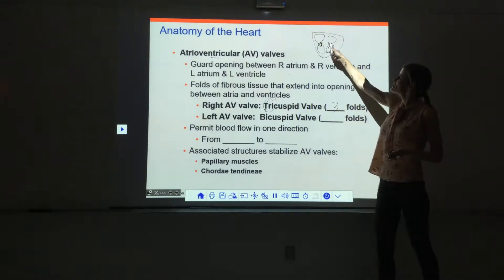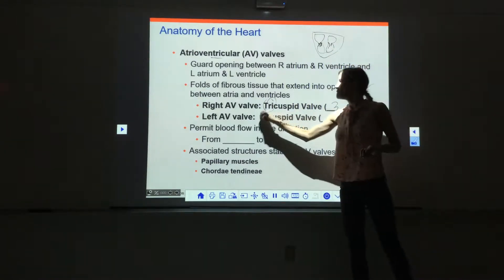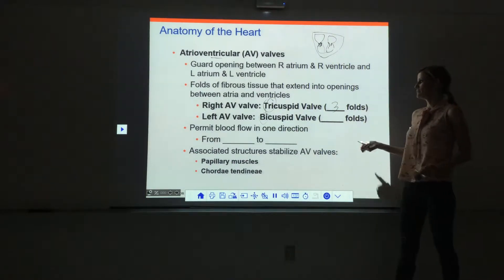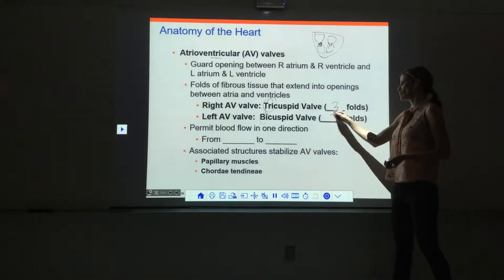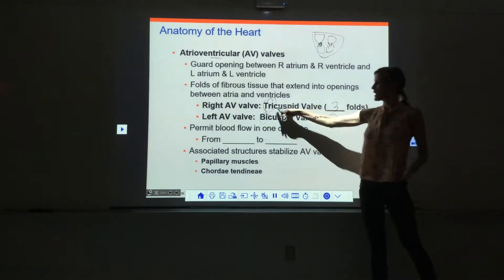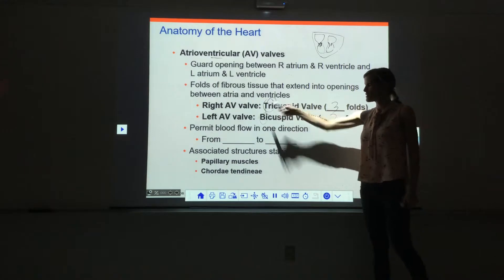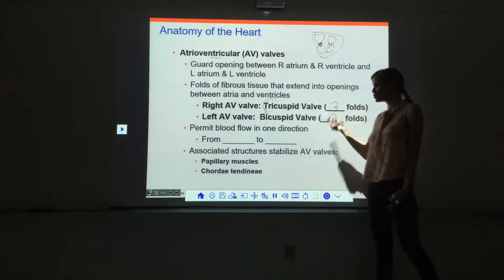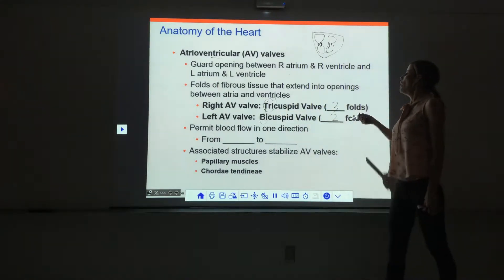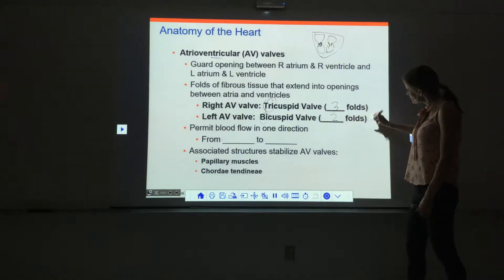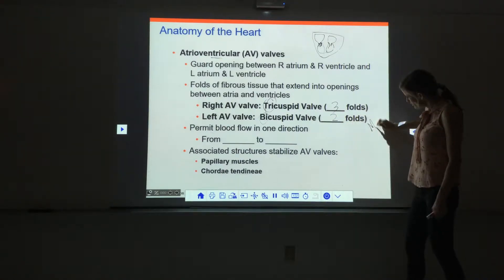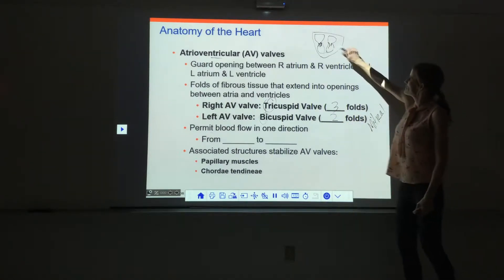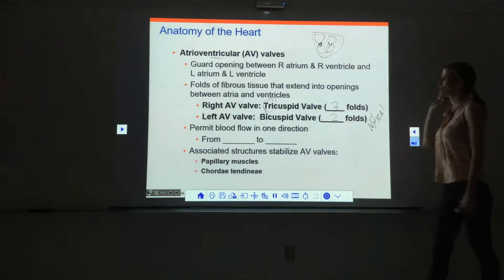On the left side it's called the bicuspid valve — bi meaning two, so it has two folds. Just like a tricycle has three wheels and a bicycle has two wheels. The bicuspid valve is also called the mitral valve.